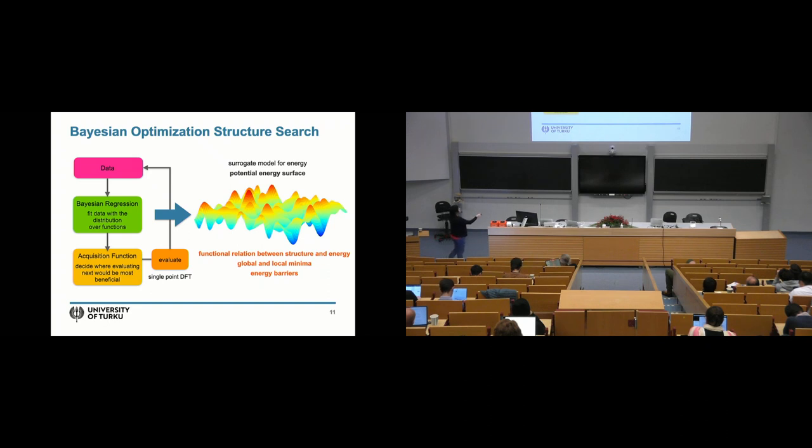We often do structure search and then this property is the potential energy surface from which we can then read out the global and local minima and also data mine the barriers between different minima. But in principle, this doesn't have to be energy. This could be any property.